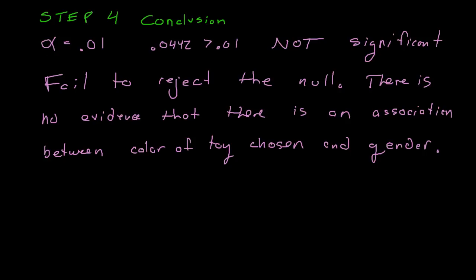To be honest, you have the authority to choose your alpha. If you had chosen alpha = 0.05, then 0.0442 would be less than 0.05, and you could reject the null and claim there is enough evidence of an association. That's the interesting thing about a middle-of-the-road p-value like 0.0442 — it could go either way. I prefer alpha = 0.01, so I fail to reject the null. Hopefully this video made the four major steps of a chi-squared test for independence clear.